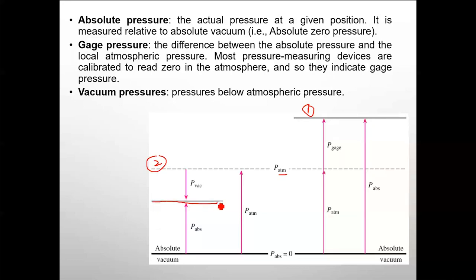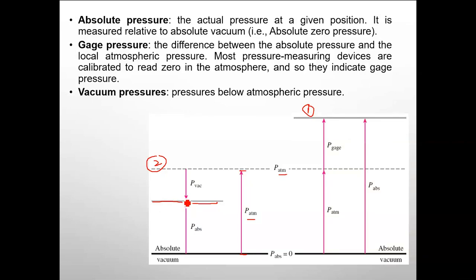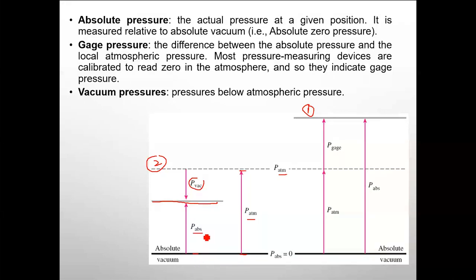Atmospheric pressure is the pressure from absolute vacuum to the atmosphere. The difference between the atmosphere and the lower location is the vacuum pressure, and the pressure from absolute vacuum to that location is the absolute pressure.